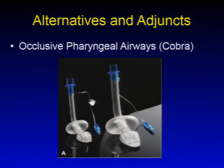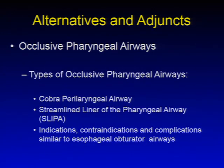Next, occlusive pharyngeal airways — an example is the COBRA. Other devices in this category include the streamlined liner of the pharyngeal airway, known as SLIPA. Indications, contraindications, and complications for these devices are all similar to esophageal obturator airways.